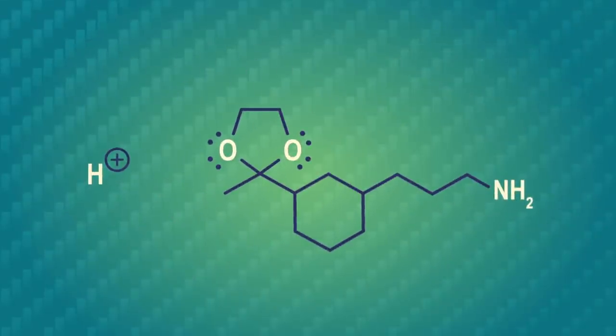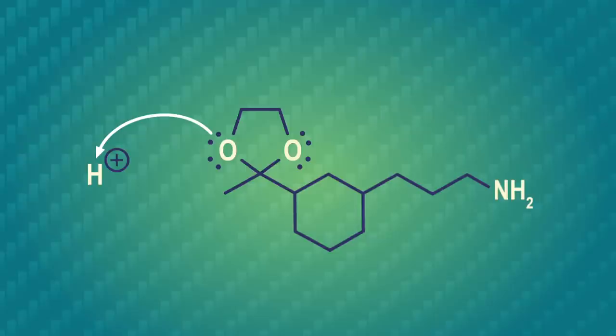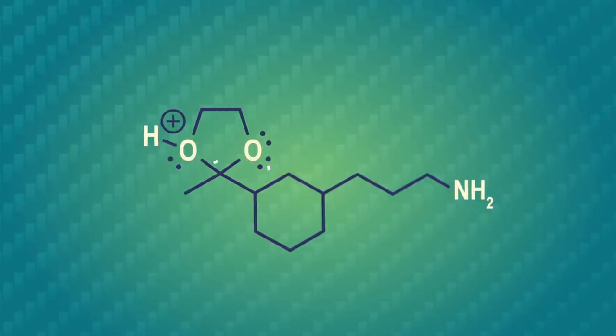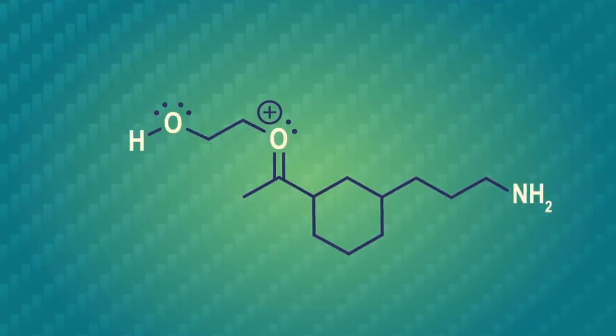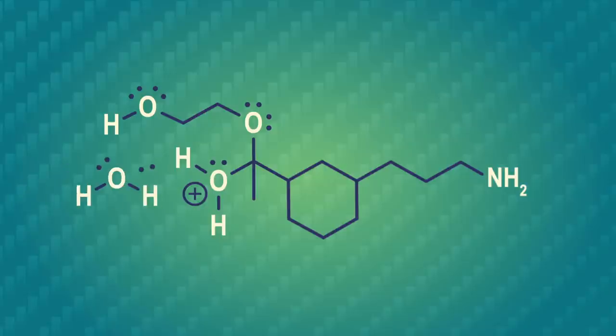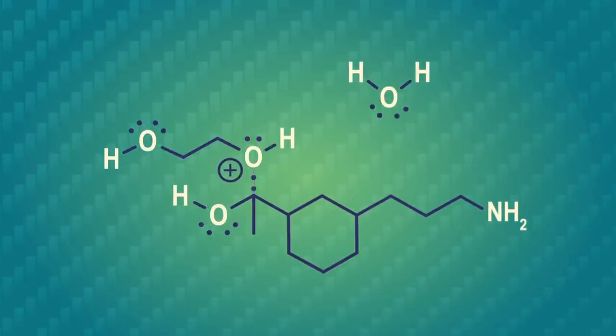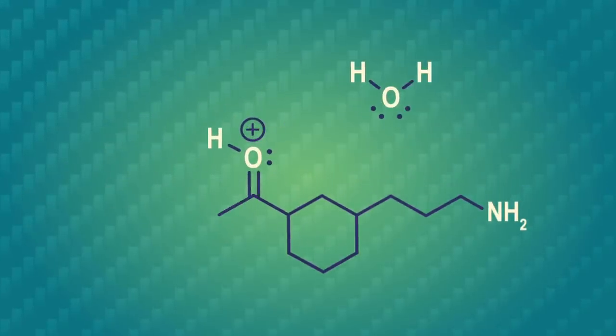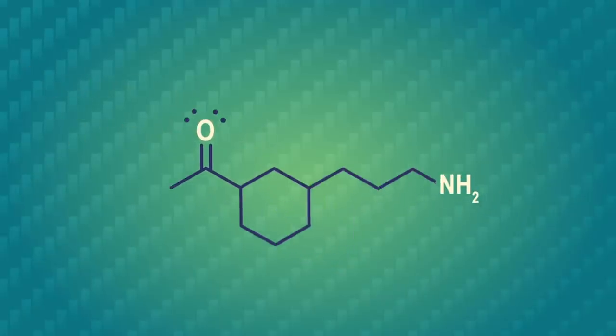Let's take a closer look at this removal mechanism. One of the oxygens in the acetal group grabs a proton, which leads to one of the oxygen-carbon bonds breaking with a push from the neighboring oxygen. Next, a water molecule swoops in, kicking off a chain of proton transfers and electron movement, which eventually forms an oxonium ion.